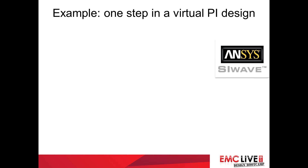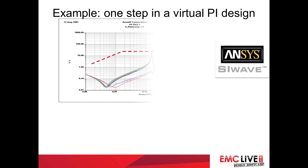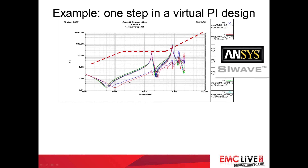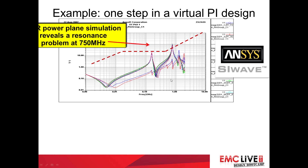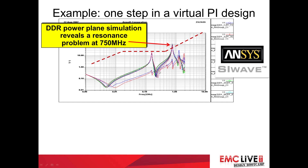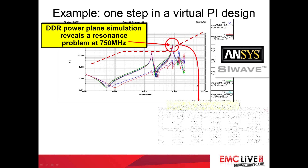Let's look at an example — this is just an example of power integrity. Here you can see the spec for the impedance versus frequency for the power supply for a particular chip. It's been simulated and we've found several resonances. You can see one of them is over the limit line at 750 MHz, so that's bad. And we go through various analysis modes.